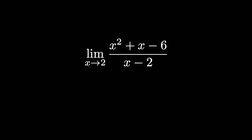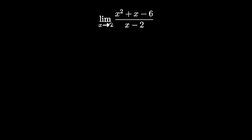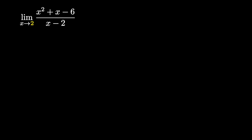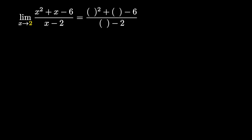As always, the first thing we want to do is plug in the value that x is approaching into our function. In this case x is approaching 2, so we plug in 2, and that gives us 2 squared plus 2 minus 6, all over 2 minus 2.